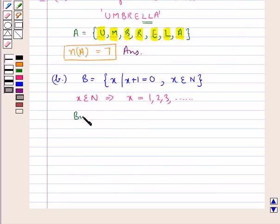However, we know that −1+1=0, and −1 does not belong to N. This means there is no natural number which, when added to 1, gives us 0.